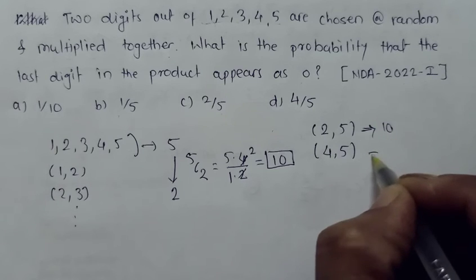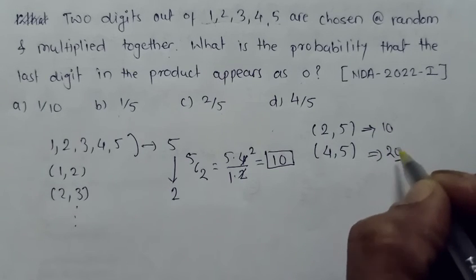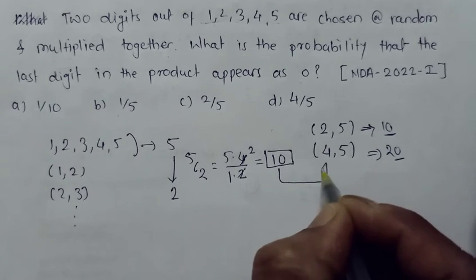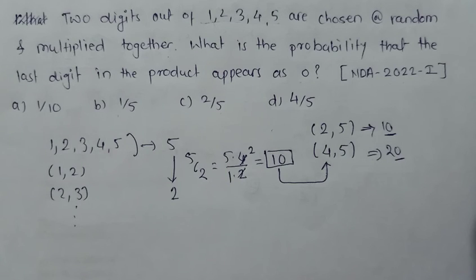4 × 5 is 20. So it is 10 and 20. What they have asked is the last digit in the multiplication should be zero. So out of these 10 pairs, these two are in my favor.